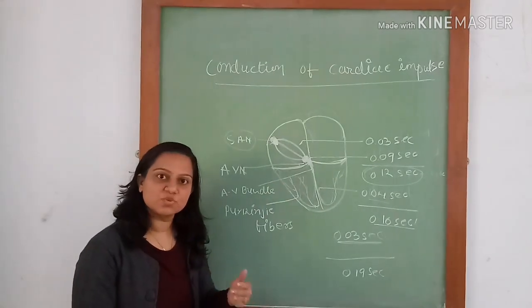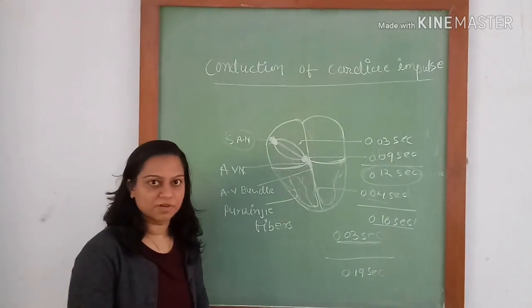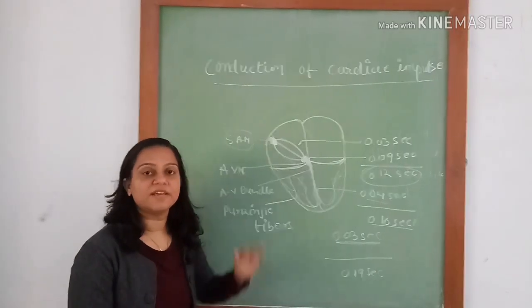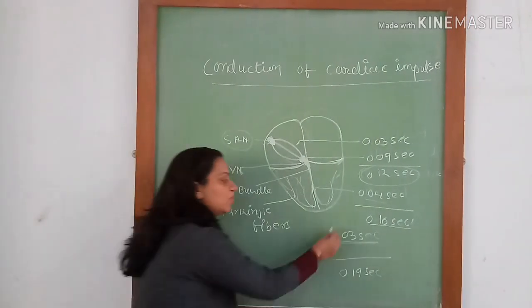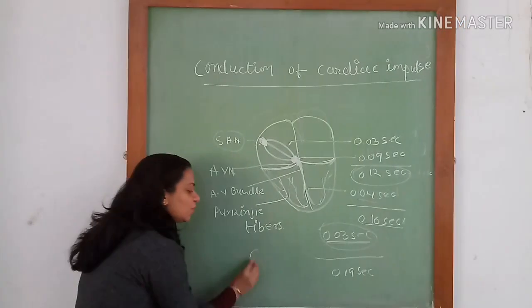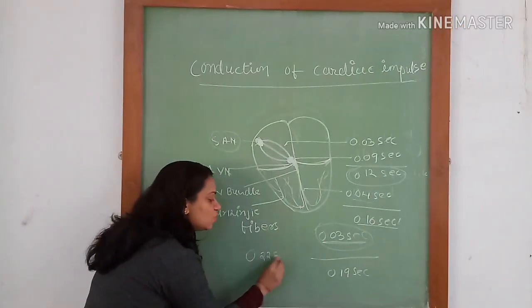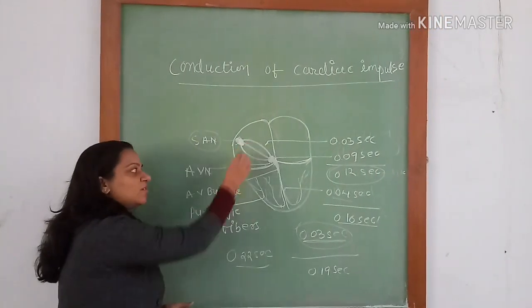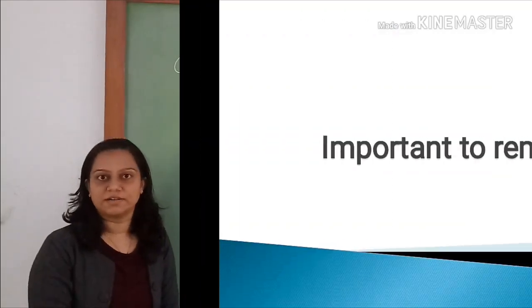Once the impulse reaches the terminal of the Purkinje fibers, from the endocardial surface to the epicardial surface it will take time of about 0.03 second, which makes total duration of 0.22 second for the impulse to reach from the SA node to the epicardial surface of the heart.